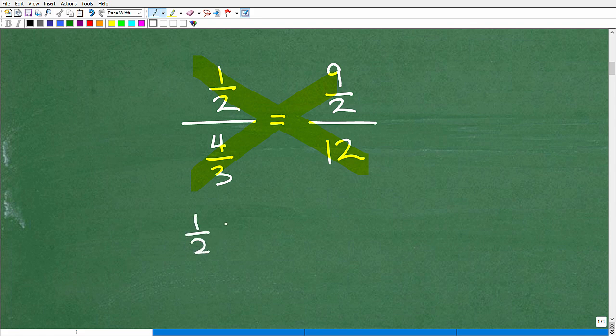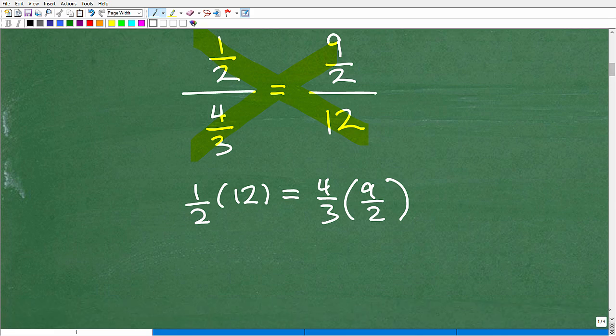So we're going to have one-half, and we're going to multiply that by 12. And we want to see if that's the same thing as four-thirds, times nine-halves. All right. So this is the situation. We want to see if this is equal. And, in fact, if they are equal, then this is a proportion. And if they are not equal, then this is not a proportion.